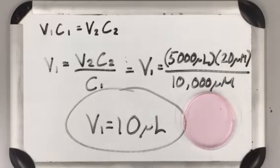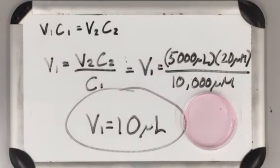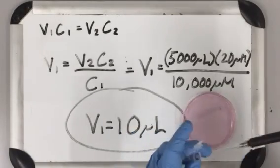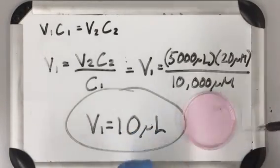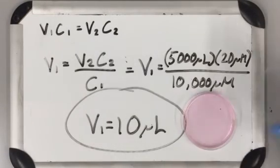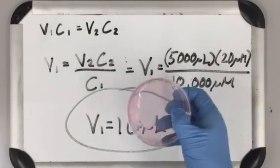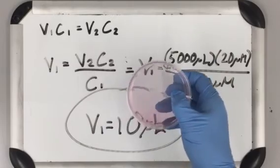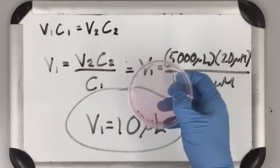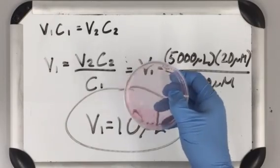Clip a tip, get a new tip on, and add 10 of my drug. What we just created is 5 ml of drug-inhibited cells with a concentration of drug at 20 micromolar, and so these are ready for testing.